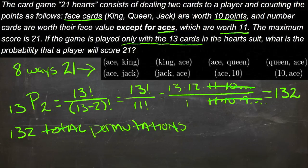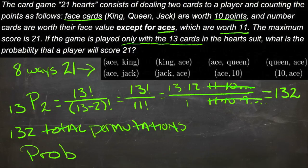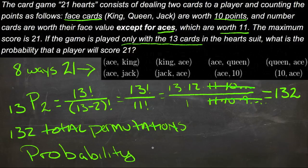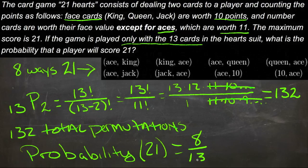And that number, out of that number, 8 of them work for what we want. So our probability then, our probability of getting 21 is 8 out of 132.